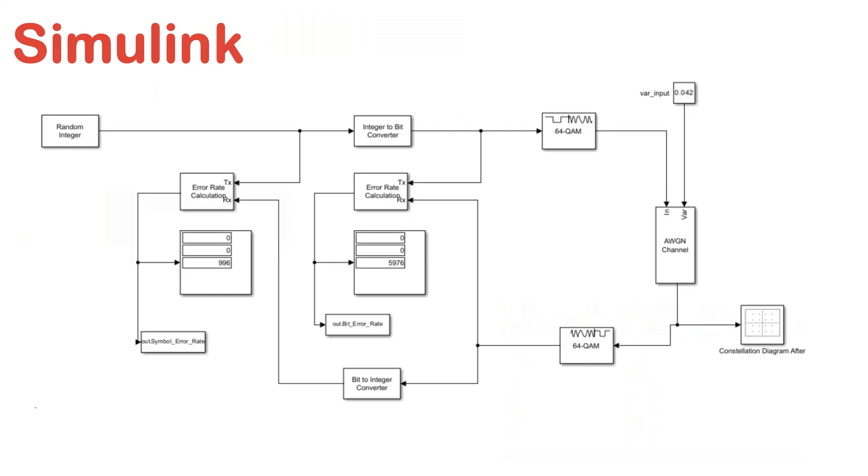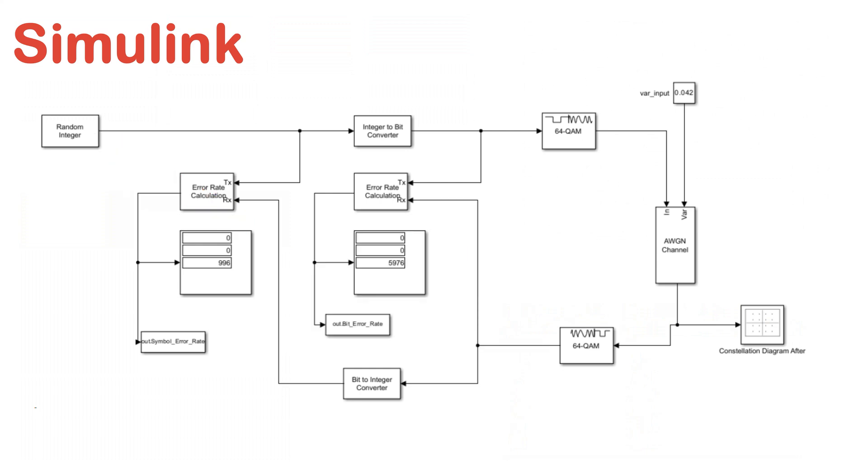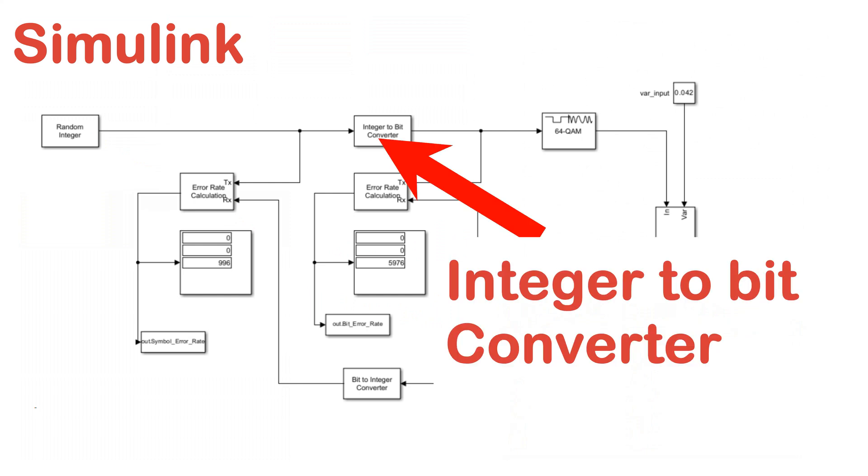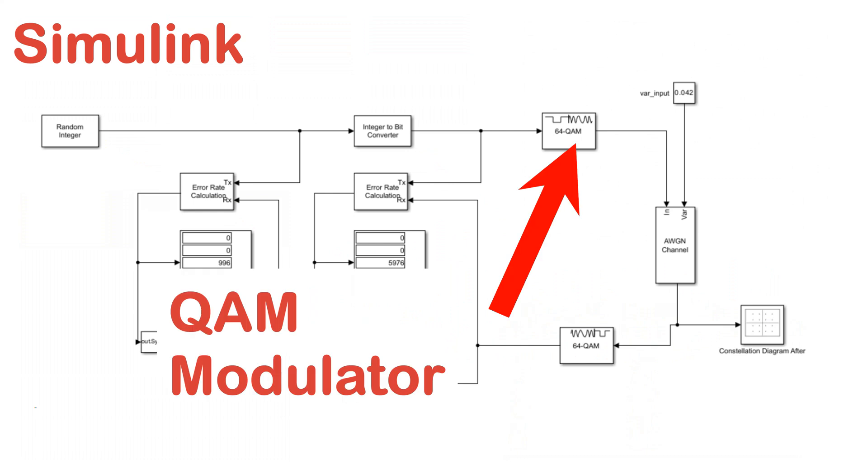We start by generating random data. In Simulink, we use the random integer generator block to generate integers. These integers are then converted into bits using the integer-to-bit converter block. These bits will serve as input for the QAM modulator.